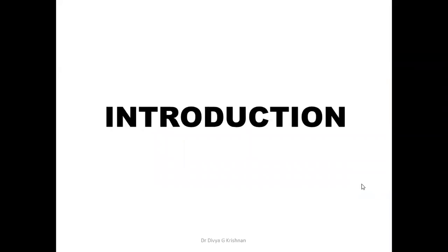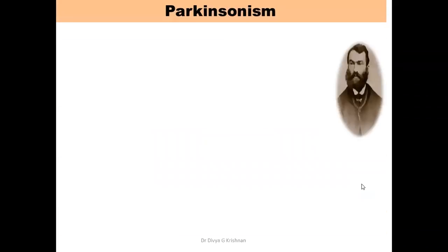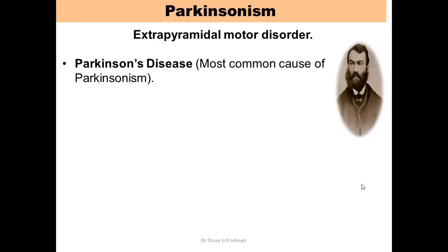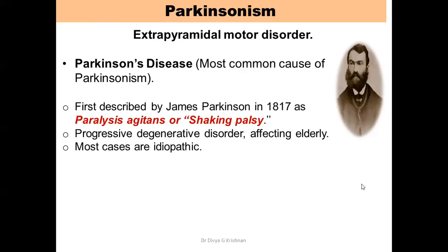We shall be starting with the introduction to this topic. Parkinsonism is an extrapyramidal motor disorder. The most important cause of Parkinsonism is Parkinson's disease, so called because it was first described by James Parkinson in 1817, and he had termed it as paralysis agitans or the shaking palsy. It is a progressive degenerative disorder which usually affects the elderly and most cases are idiopathic.